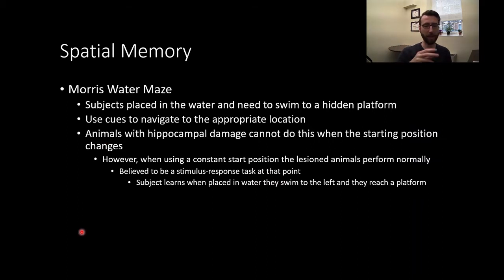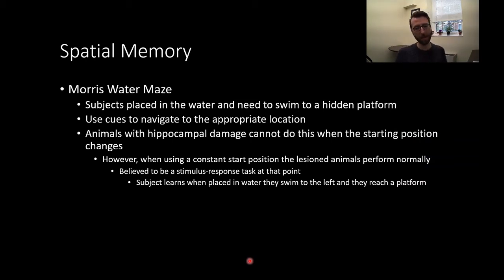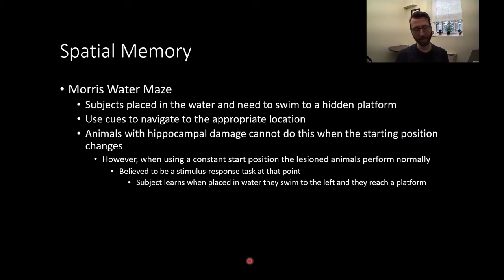If the animals are released from a different location every time, they have trouble learning the navigation, because in order to navigate from different points in space you need a complete cognitive map — you can't just make a response when placed into the pool. However, if we have a constant start position, the lesion animals can perform normally. It's similar to a stimulus-response task: the rats are placed into the water and can perform a response — turn right, swim in this direction — and they'll reach the platform. They don't need a cognitive map, only knowing what to do when placed in a given situation. With the same start position and same goal location, you don't need an intact hippocampus.